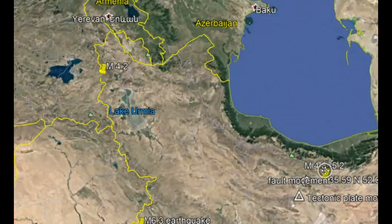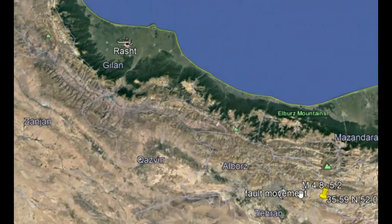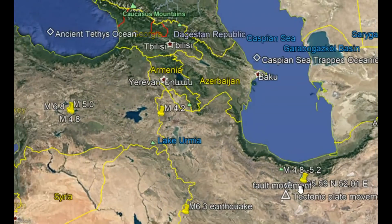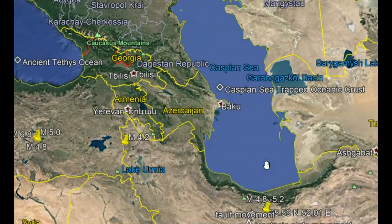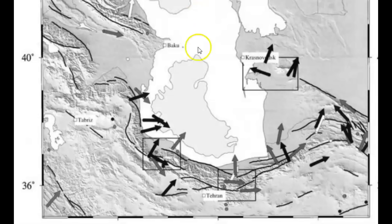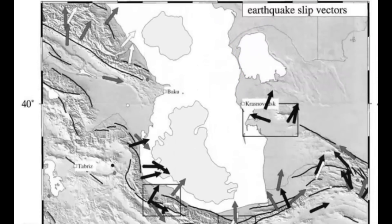Going back to the earthquake — originally 5.1, then 4.8 — and the Caspian Sea. That's interesting because it's having the same effect as what's going on in the Caribbean. The Caspian Sea is being crushed. The north is sliding south. Here I found a paper with the different fault lines, including the Turan fault, showing movement towards the north. There's a lot going on here.